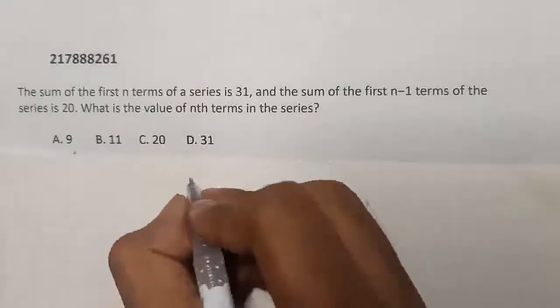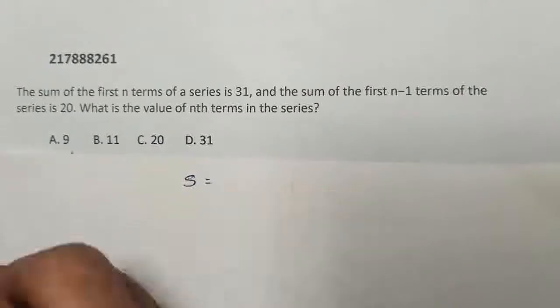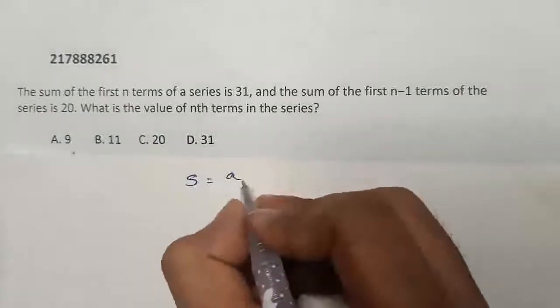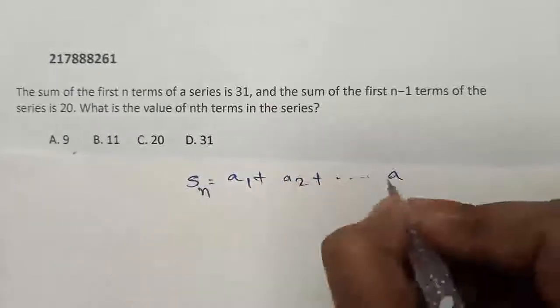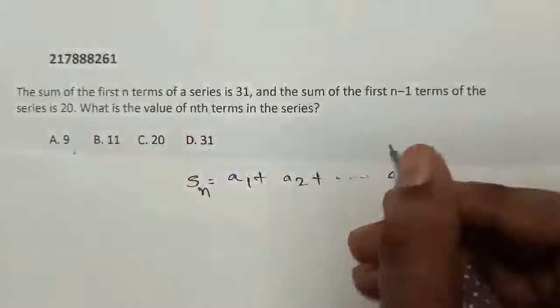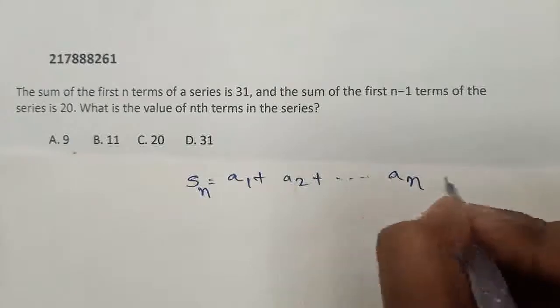So, let us say S is the sum. So, if the first term is a₁, this is a₂, this is the nth term, so sum up to nth term. So, first n terms, this is aₙ. So, this will be sum up to aₙ.